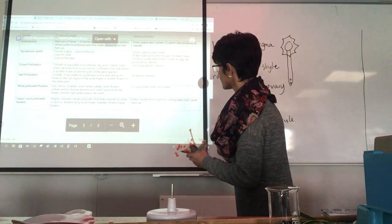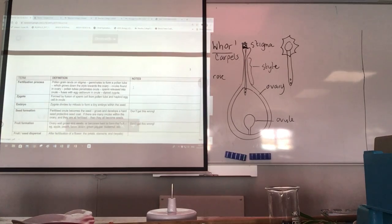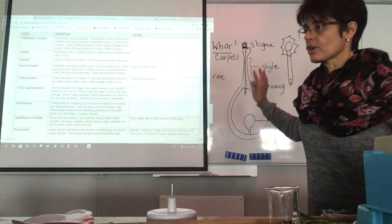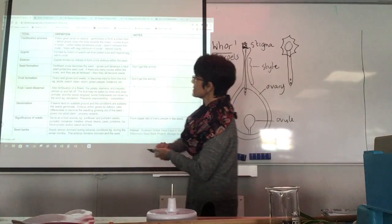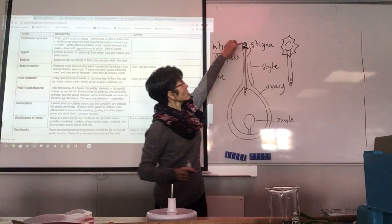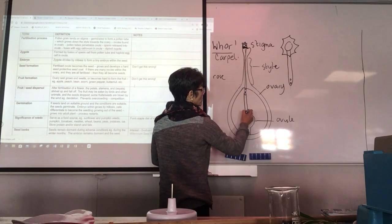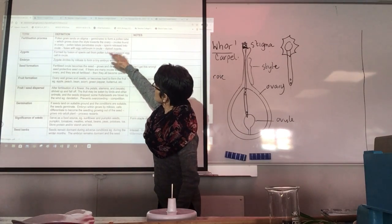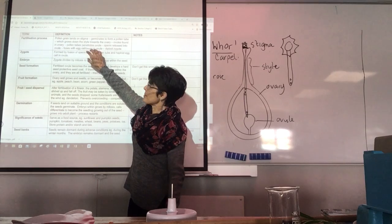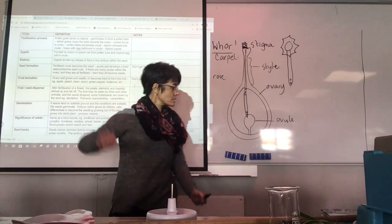We haven't talked about fertilization yet. So that's all about pollination. Now the pollen grain is sitting on top of the stigma — so what happens next? The fertilization process. The pollen grain lands on the stigma, it germinates if it matches — if there's a chemical reaction — and it grows a pollen tube down through the style and then eventually into the ovule. The ovules are found in the ovary. The pollen tube penetrates the ovule, the sperm are released into the ovule, and it fuses with the egg cell in the ovule — then you get a diploid zygote.